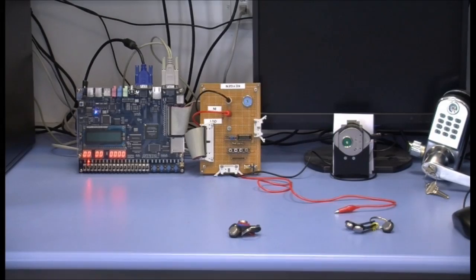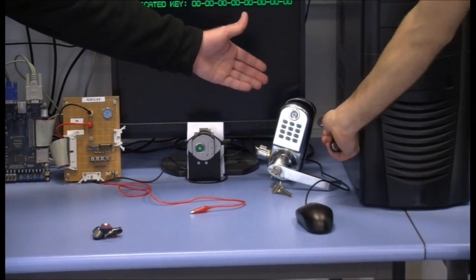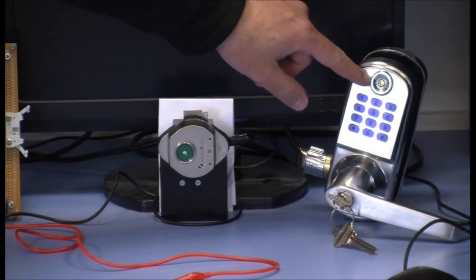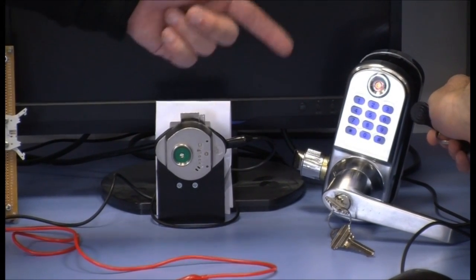To demonstrate our system we also have here two locks. This is a lock for domestic and office use. When we put the correct key to the lock you can see the green LED and the scratch sound which means that the deadbolt is released and the door can be opened.